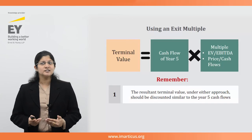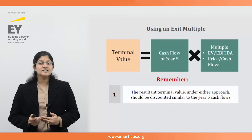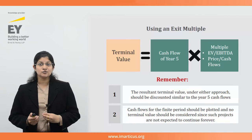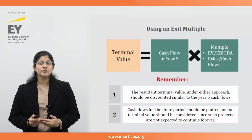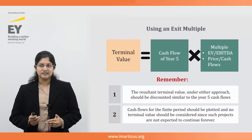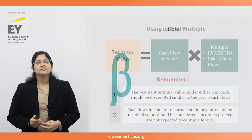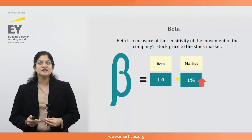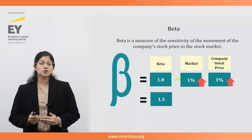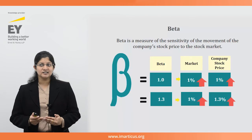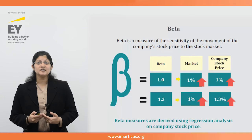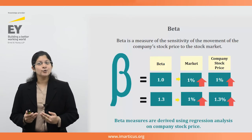For finite life businesses — such as a 30-year contract to construct and operate a road, or a 15-year power supply contract — cash flows for the finite period should be plotted and no terminal value should be considered, since such projects are not expected to continue forever. Another key term in DCF analysis is beta. Beta is a measure of the sensitivity of the movement of the company's stock price to the stock market in general. A beta of 1 means the company's price moves in exact correlation with the market; a beta of 1.3 means a 1% movement in the market causes a 1.3% movement in the company's stock price. Beta measures are derived using regression analysis on the company's stock price, sampled on a daily, weekly, or monthly basis over a given time period.